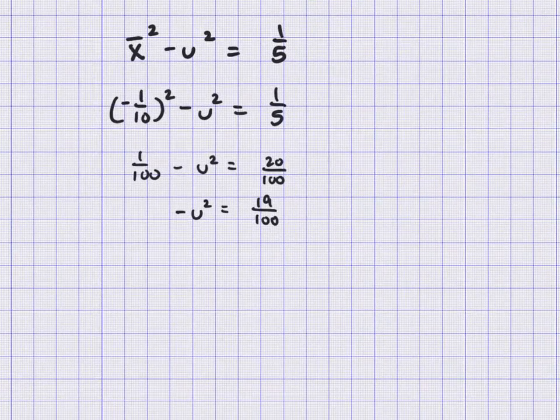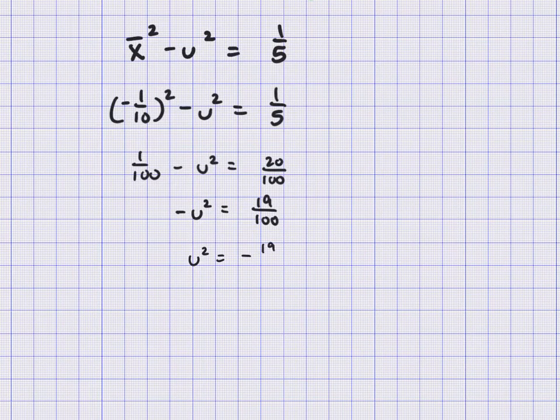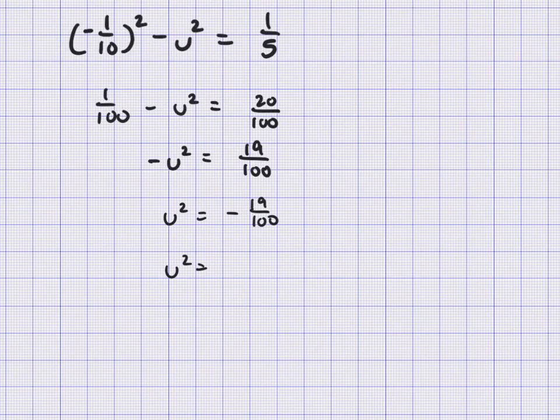Take the opposite of both sides. So u squared is equal to negative 19 over 100. And when we take the square root of both sides, we get this. The square root of a negative becomes i. So we have the i, we have the square root of 19, and nice enough, the 100 there, the square root is a 10.